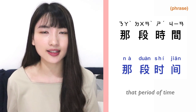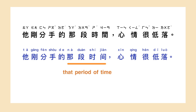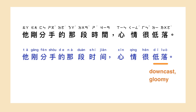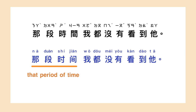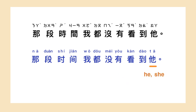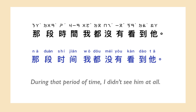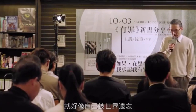There is a useful expression in the dialogue: 那段时间, which means 'that period of time'. For example: 他刚分手的那段时间,心情很低落 — He was pretty upset during the period of time when he and his girlfriend had just broken up. 那段时间我都没有看到他 — During that period of time, I didn't see him at all. 那段时间的感觉就好像自己被世界遗忘.